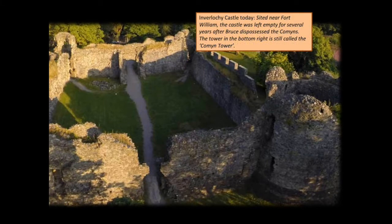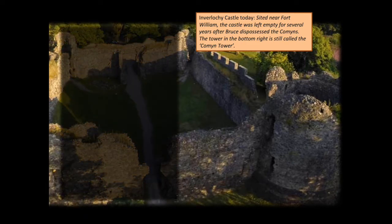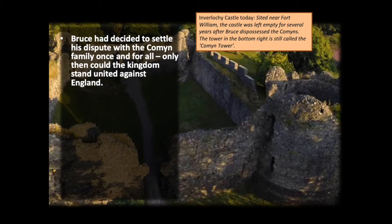One of the first obstacles Bruce encountered was near modern-day Fort William at Inverlochy — a stronghold of the Comyn family at the southwestern end of the Great Glen. This castle controlled access to Loch Ness, which offered a main thoroughfare up through the Highlands to Inverness and the Comyn heartlands in Moray just beyond. Bruce had decided to settle his dispute with the Comyn family once and for all; only once they were out of the way could the kingdom stand united against England. The Comyns, after Bruce's murder of John the Red Comyn in Greyfriars Kirk in February 1306, were never going to fall in line with Bruce against the English.